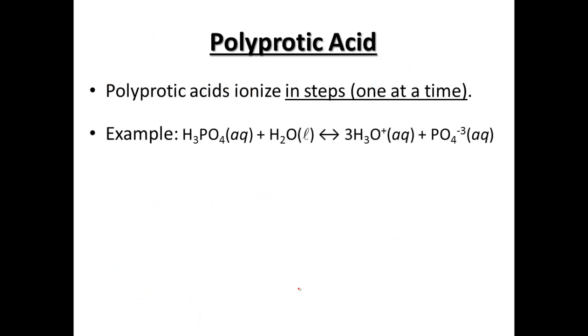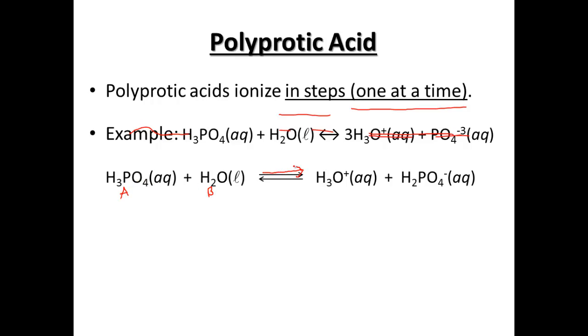Now when they do that donation, they do this in steps, one at a time. So an example, H3PO4 aqueous, so that's phosphoric acid plus water, is going to make three H3O+ and PO4^3-. Well, it doesn't quite do that all at once. It's going to instead do that in steps. So first off, H3PO4 is going to be our acid and water our base. And it's going to, through our first reversible reaction, donate one proton to make H3O+ and H2PO4-. So it's donated one hydrogen ion.